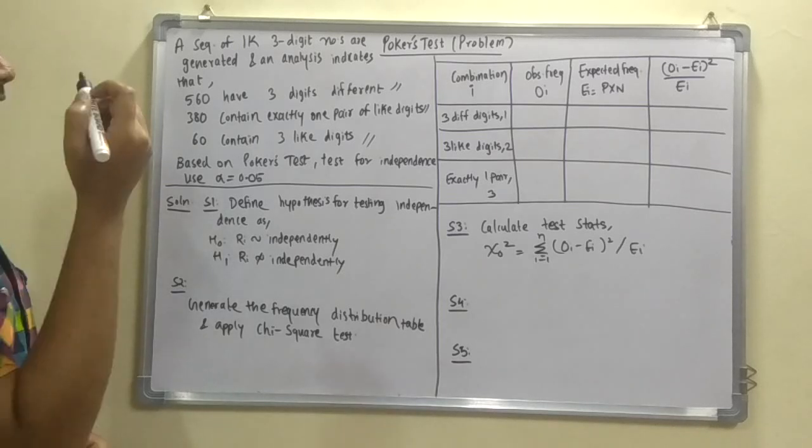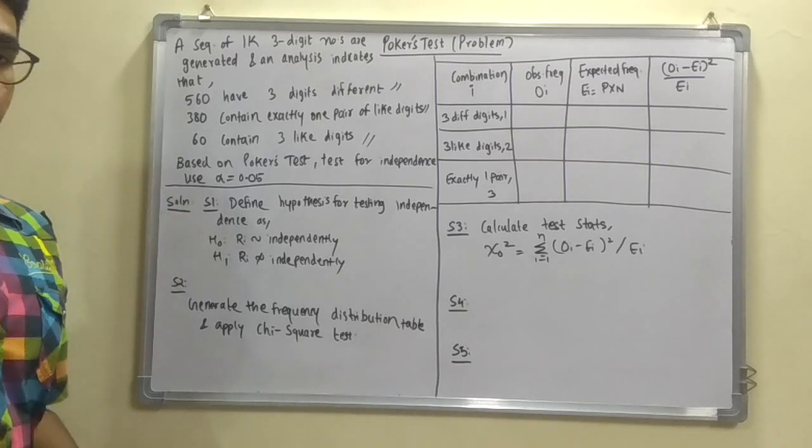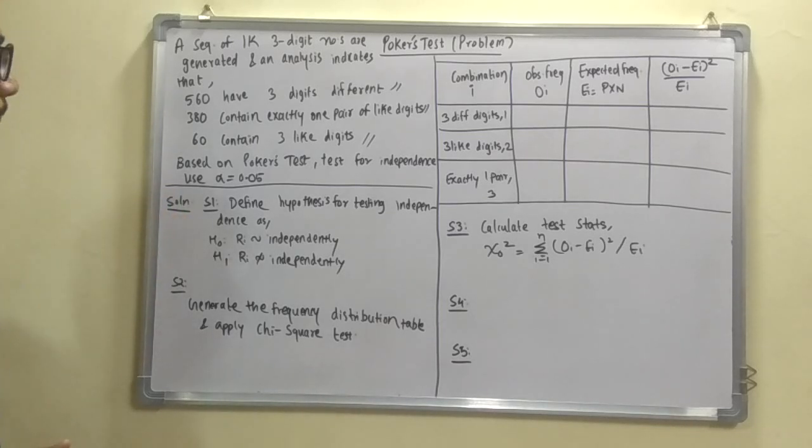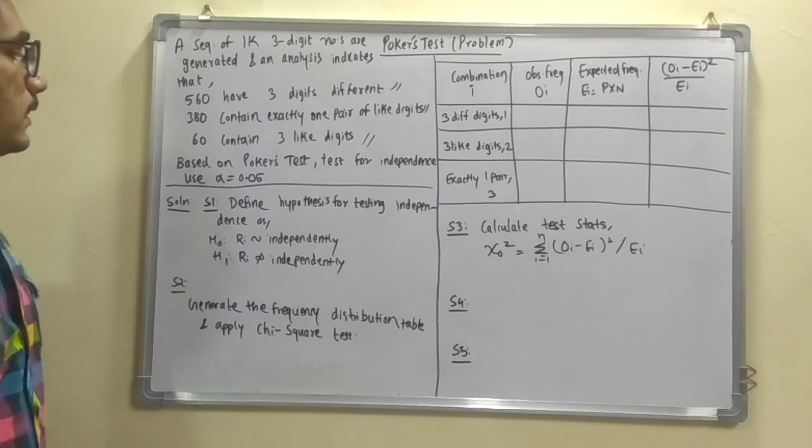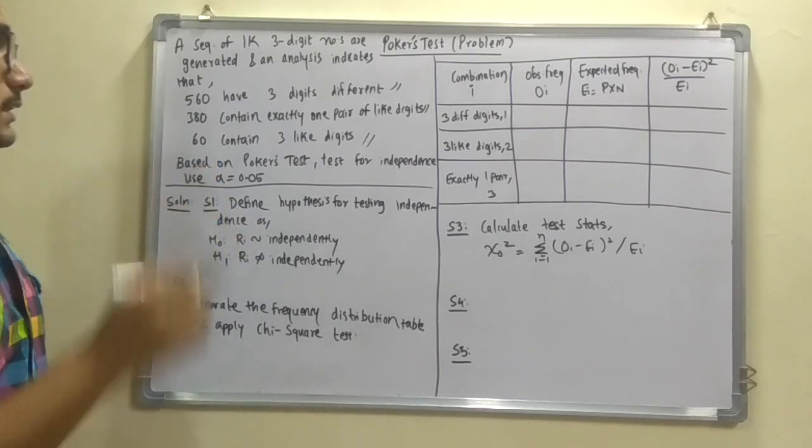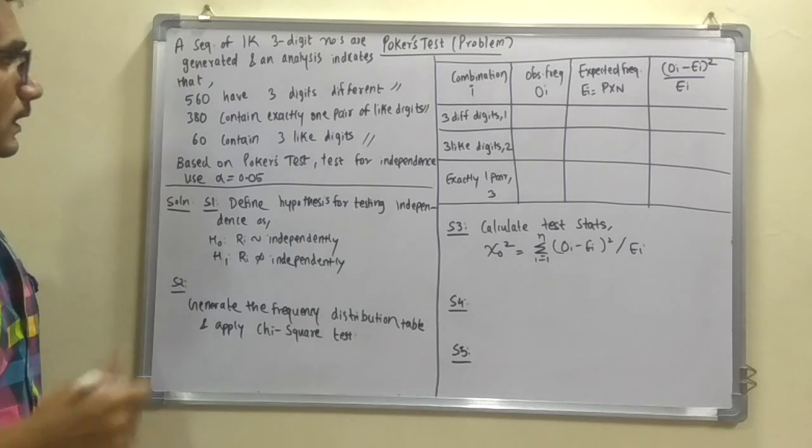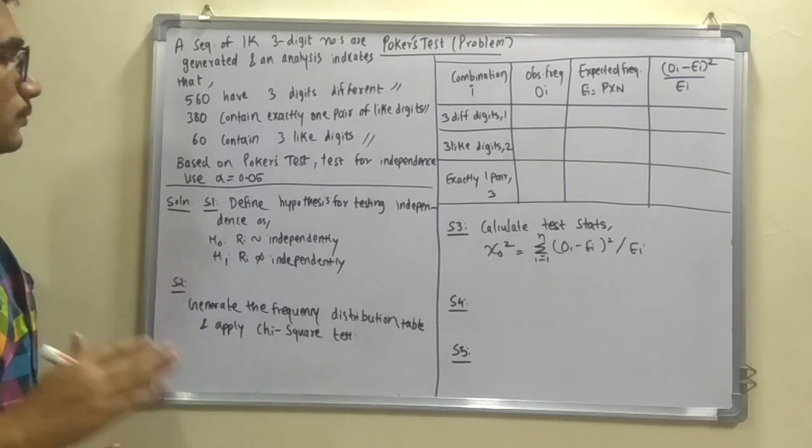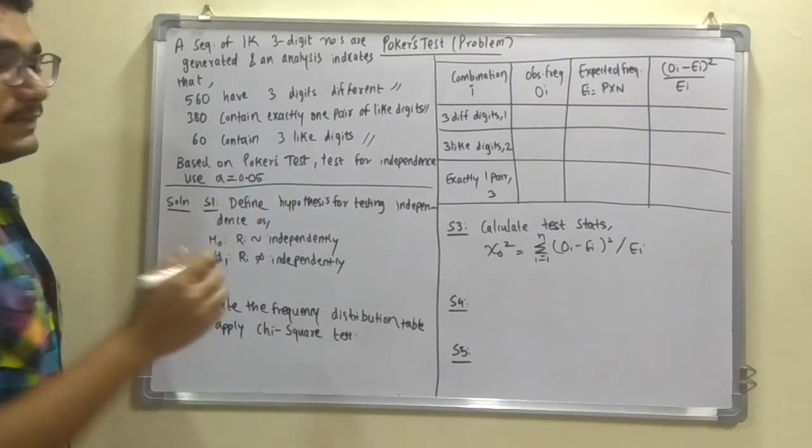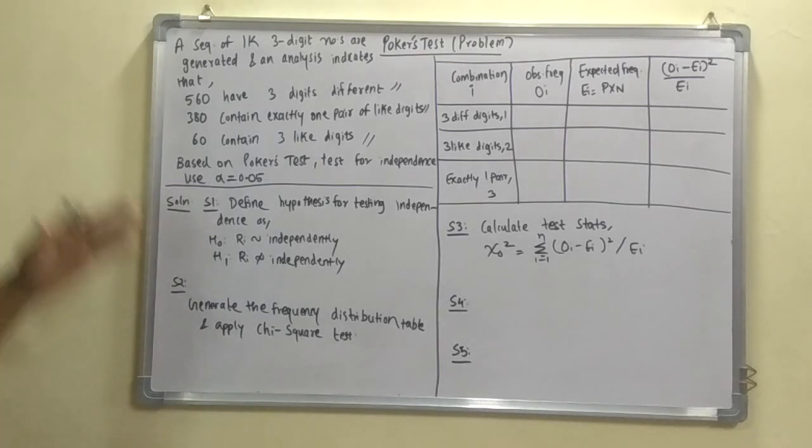So these things which you see here are the conditions that is the ABC conditions which I have discussed in my previous video based on the POCUS test algorithm. And so they are saying that based on the POCUS test you have to test for the independence of these numbers. That is for the 1000 numbers. And you have to use alpha as 0.05. So this is all the problem question.